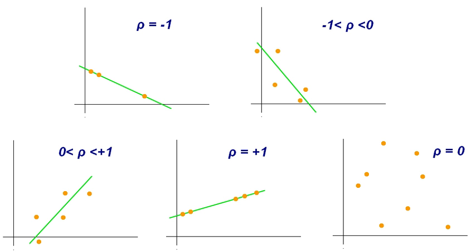See also: Anscombe's Quartet, Association, Coefficient of Colligation, Ewell's Q, Ewell's Y, Correlation and Dependence, Disattenuation, Distance Correlation, Maximal Information Coefficient, Multiple Correlation, Normally Distributed and Uncorrelated does not imply independent, Odds Ratio, Partial Correlation, Polychoric Correlation, Quadrant Count Ratio, RV Coefficient, Spearman's Rank Correlation Coefficient.